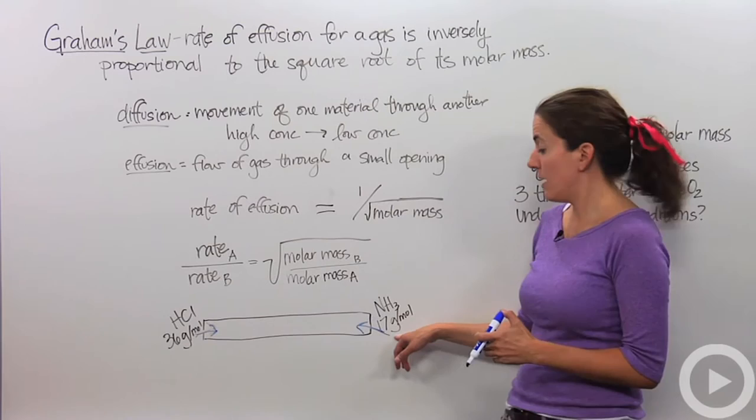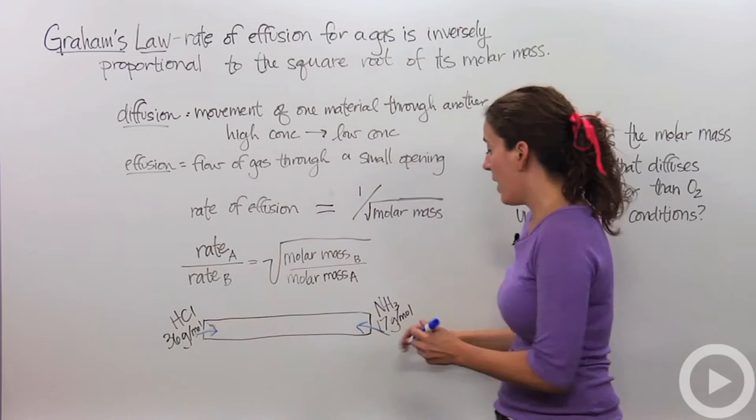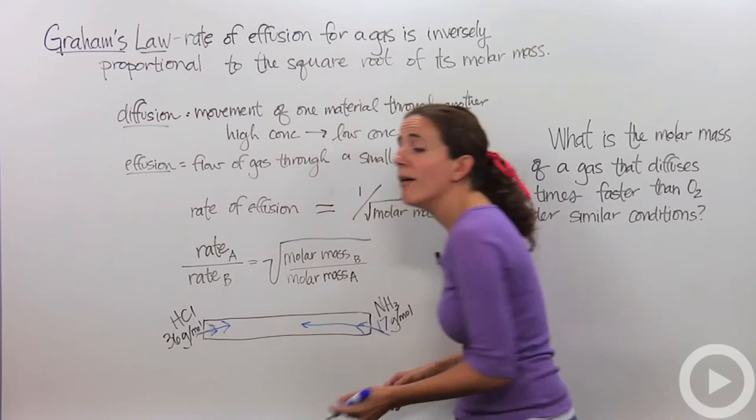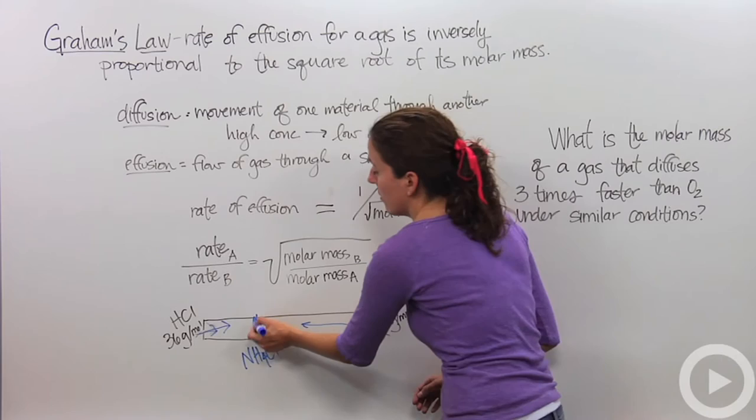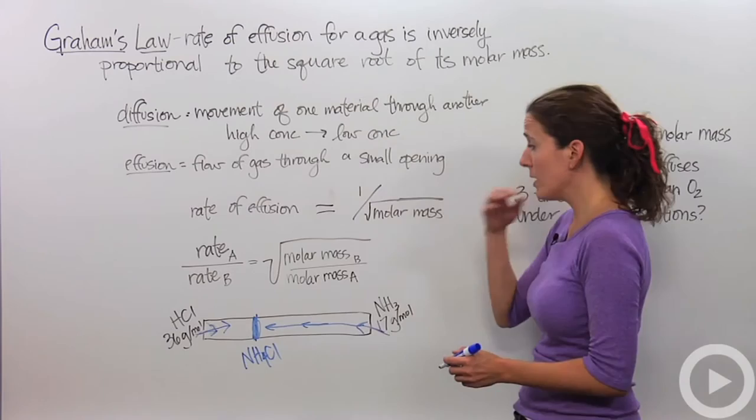So they're going to start flowing towards each other. This guy is really big and heavy, 36 grams per mole. And this guy is really light and skinny, 17 grams per mole. So this guy should travel faster than this guy, right? So this guy is going to travel fast. This guy is going to travel slow comparatively because it's really heavy. So they're actually probably going to meet closer to the hydrogen chloride end, probably around here where you're going to get ammonium chloride, probably typically around here because this is going to travel a lot faster than this guy.